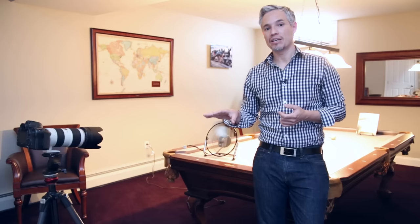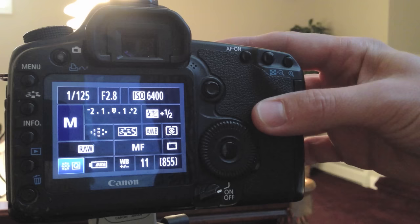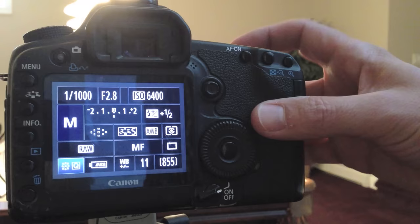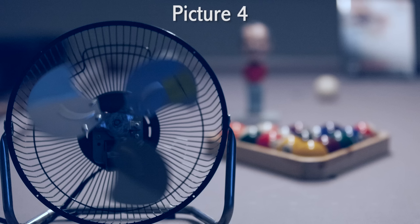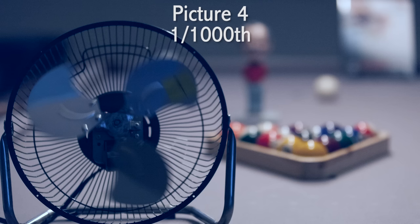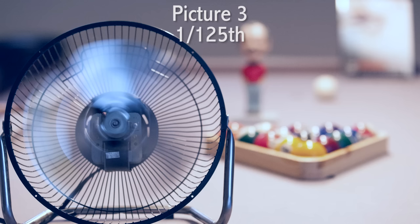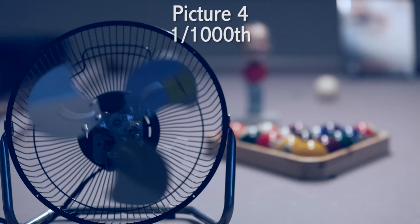I'm going to set it in manual mode and configure it to expose the picture properly, then take a test shot. I set the camera to manual mode with a shutter speed of 1/1000th of a second, f2.8, and ISO 6400. Those settings together allowed the camera to expose the picture decently. You can see that blade of the fan is just about frozen because 1/1000th of a second is pretty fast. The objects in the background — my dad, the cue balls, and my book — are all pretty well blurred.